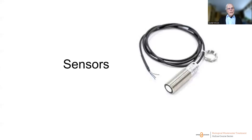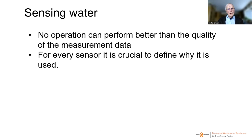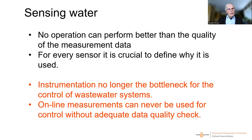Looking at sensors, there has been a tremendous development in online sensors for wastewater treatment, and this has a profound impact on the applicability of instrumentation, control, and automation. No operation can perform better than the quality of the measurement data. We have to examine why a specific sensor is used, where to place it, and how to use it — and also how to take care of the data to provide useful information.